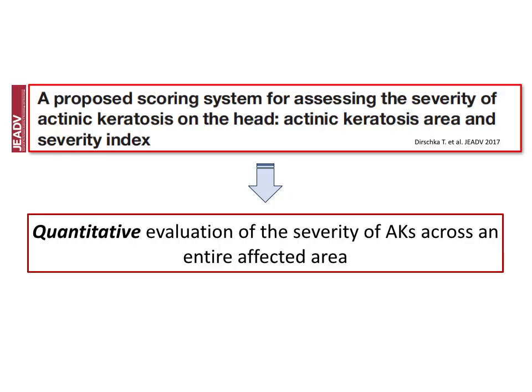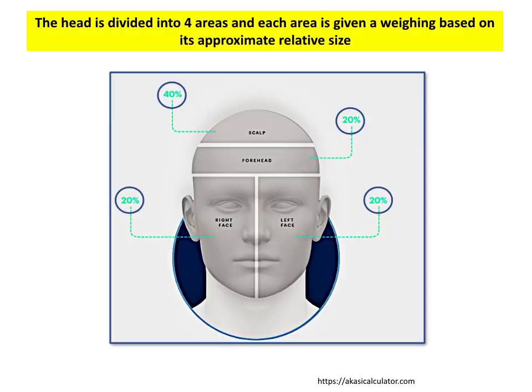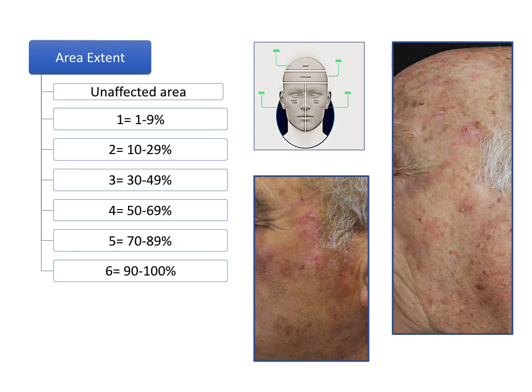The other scale is the ACASY score, which provides a quantitative evaluation of the severity of an AK case across an entire affected area. The head is divided into four areas and each area is given a weighting based on its approximate relative size. For each region, the percentage of the area affected by AK is estimated and a numerical value from 0 to 6 is assigned.